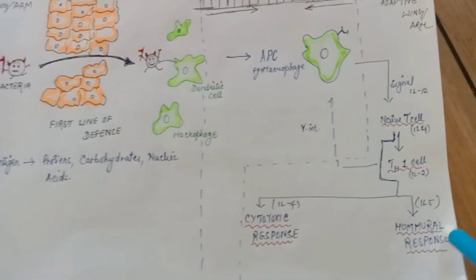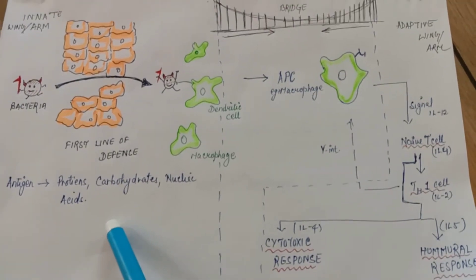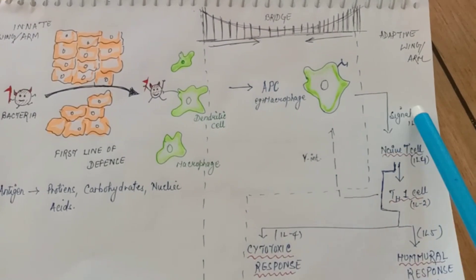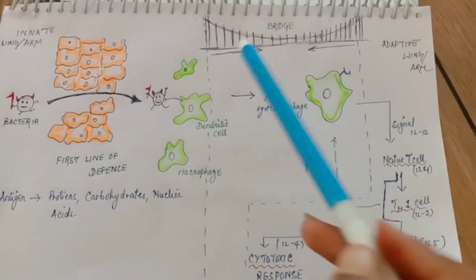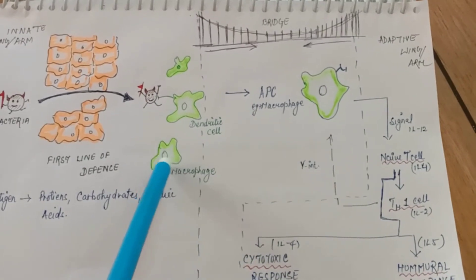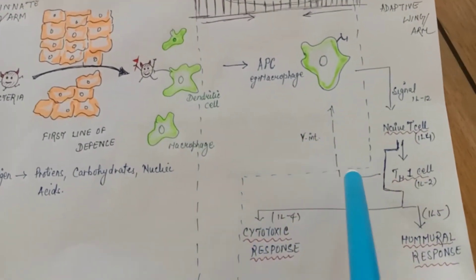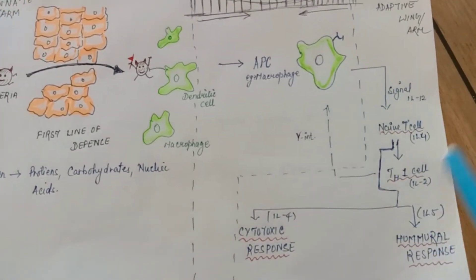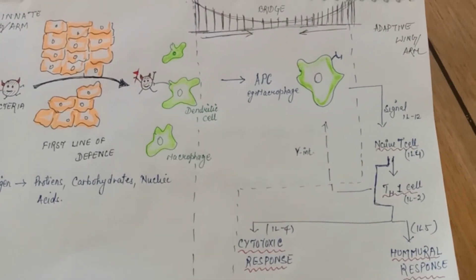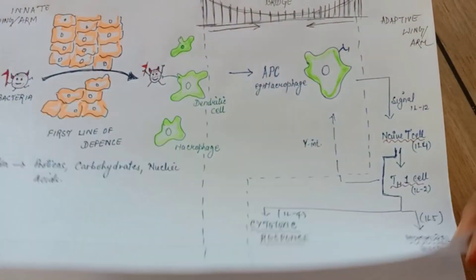There are two types. Antigen can be protein, can be carbohydrate, can be nucleic acid. Remember one thing, suppose this is innate wing, this is adaptive. Here is a bridge: APCs, antigen presenting cells are the bridge between both. They will just link up and exchange things from adaptive to innate and innate to adaptive.